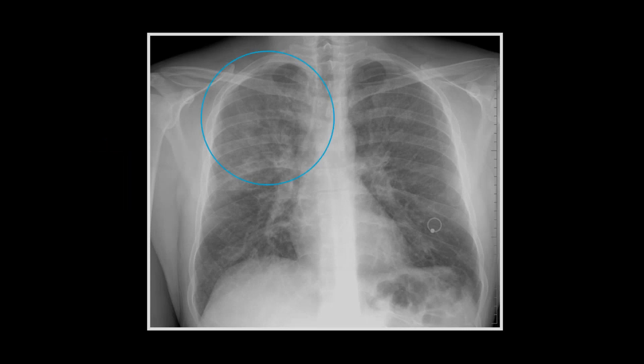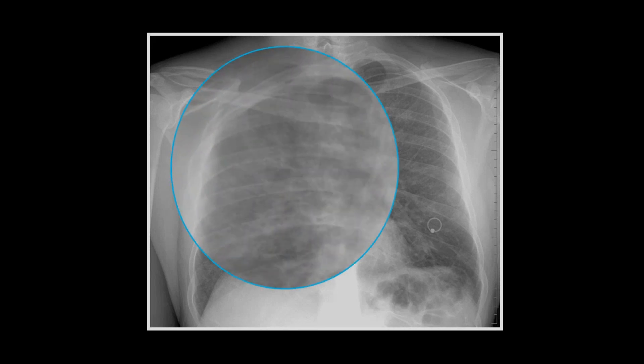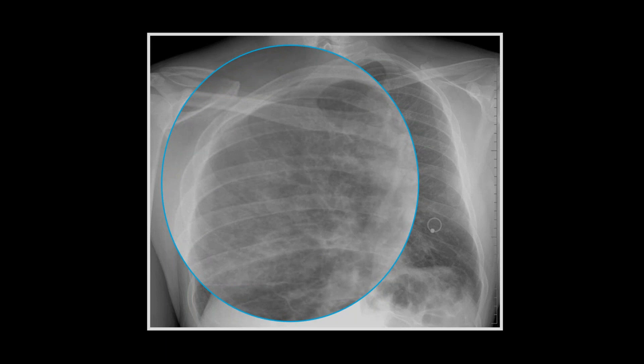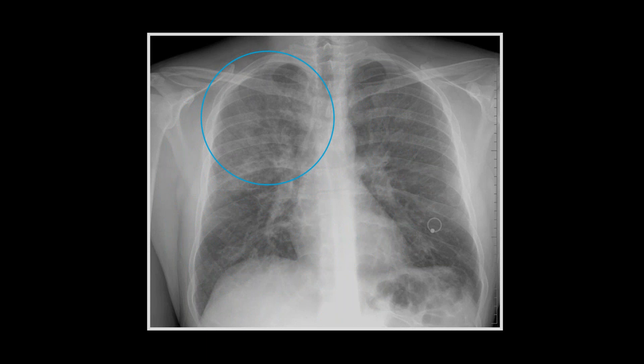Our next one is pretty subtle, but there it is — right upper lobe ground glass density. This is a case of PCP; don't say 'PCP pneumonia' because that second P stands for pneumonia. A very nice example of how subtle ground glass density can be. It's like looking at someone behind a frosted shower door — you can see that there's something there, but you can't make out detail. You're losing the lung detail you'd expect to see, which you can in fact see in the left upper lobe.